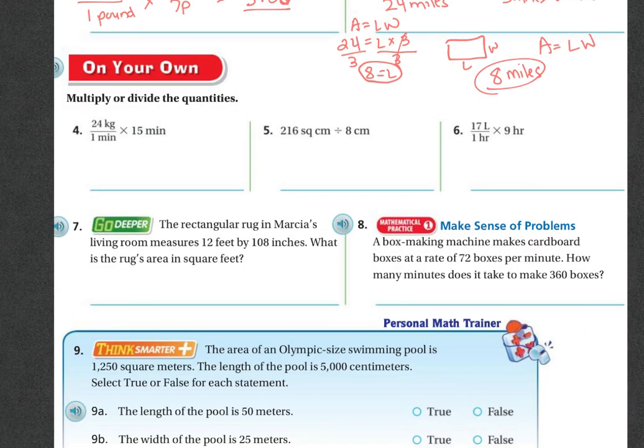So we're going to multiply or divide. That's what we have to figure out here. We've got 24 kilograms over one minute and 15 minutes. If I cross these out, then I'm left with 24 times 15. And 24 times 15 is 360. And my leftover is kilogram. Then over here, I've got 216 divided by eight. 216 divided by eight is 27.